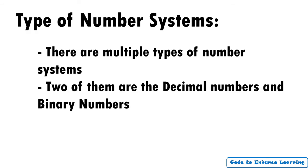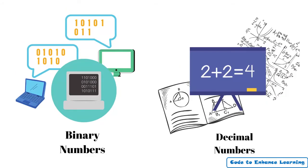There are multiple types of number systems. Two of them are decimal numbers and binary numbers. Computers use binary numbers, whereas we humans understand the decimal numbers.